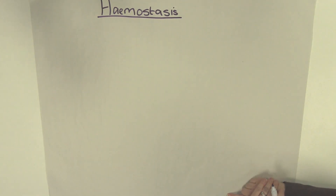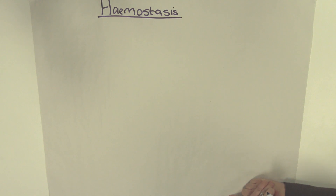This video provides a very brief overview of haemostasis. There are three processes involved in haemostasis: vascular spasm, platelet plug formation, and blood clotting.